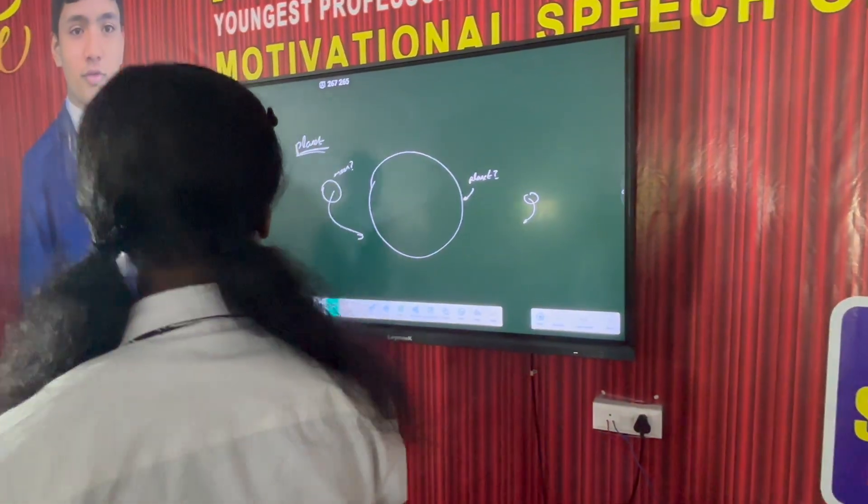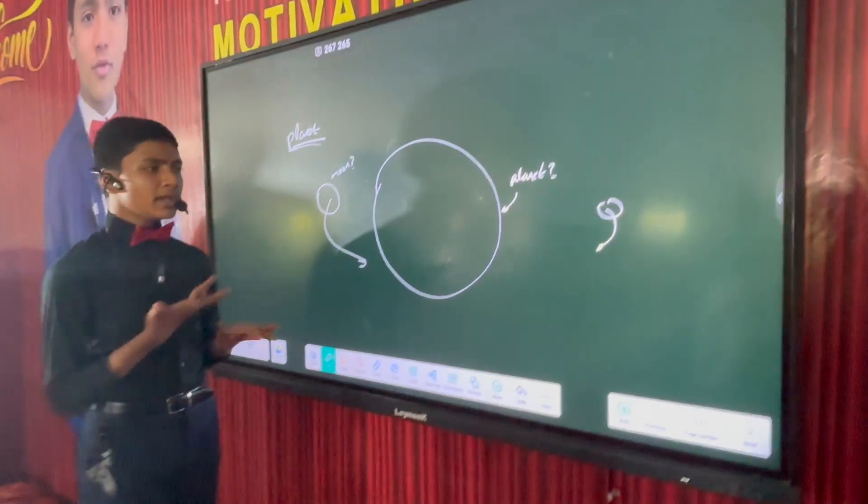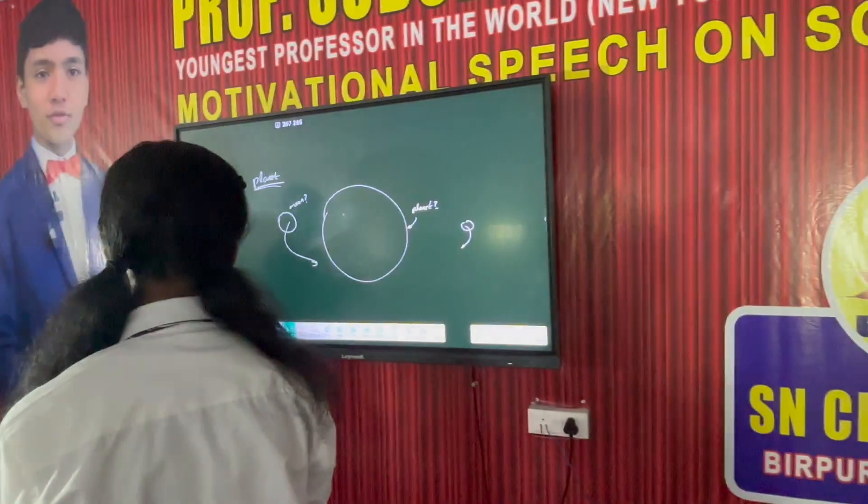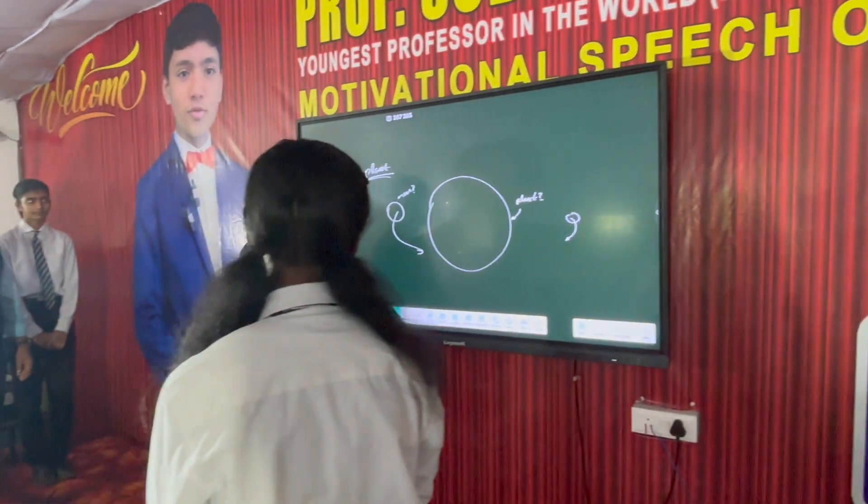So planets, moons, dwarf planets, they're outdated terminology, but we still use them because all our children have learned about them. And so we don't have a precise definition of what planet really means.